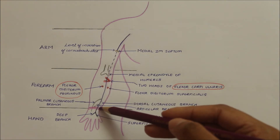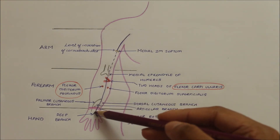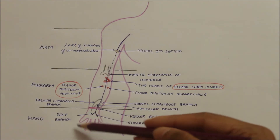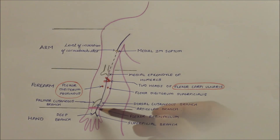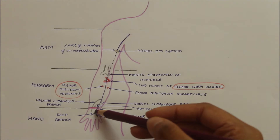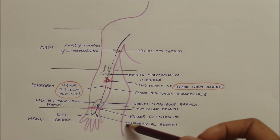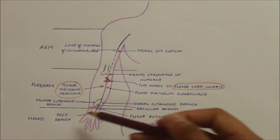At the wrist it passes above the flexor retinaculum and enters into the palm. In the palm it divides into a superficial and a deep branch.